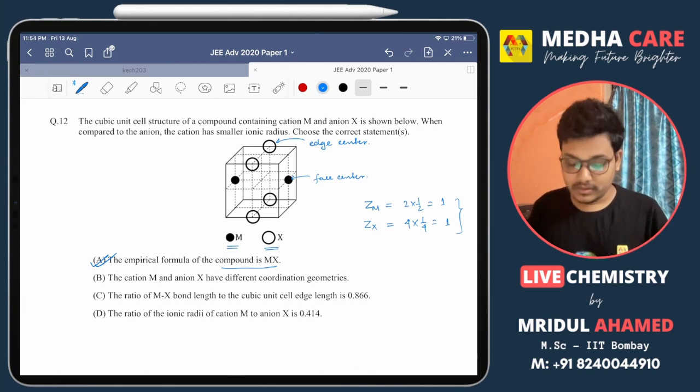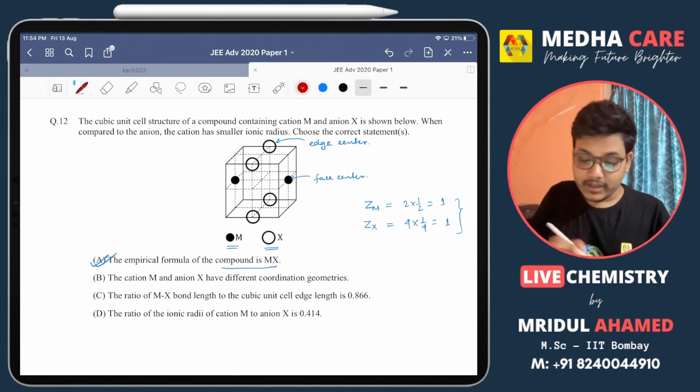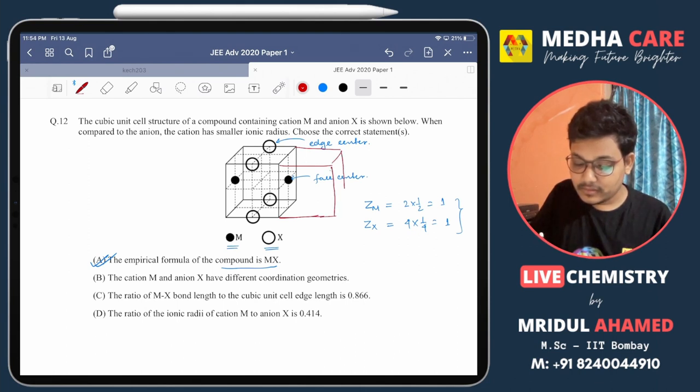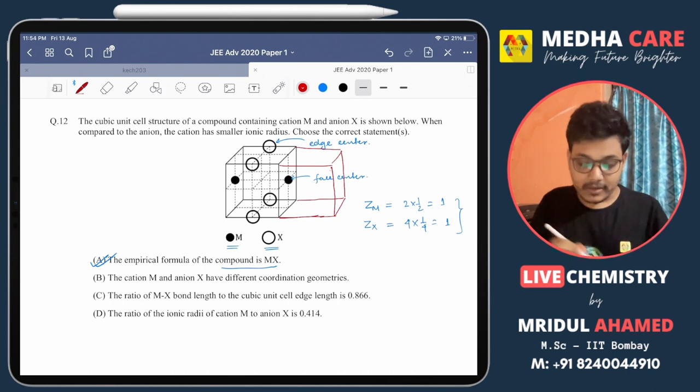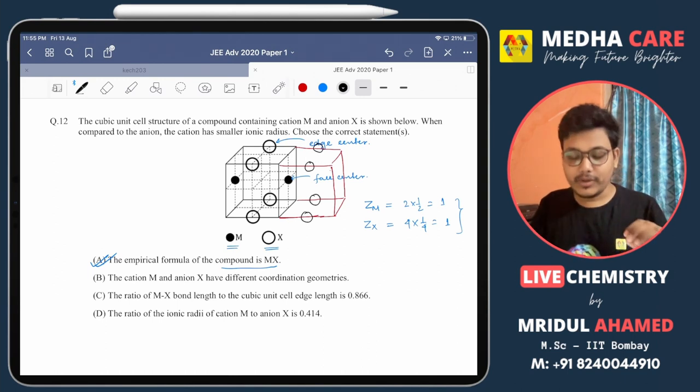Now going to option B: the cation M and the anion X have different coordination geometries. Let me draw another cube just beside this cube. This is just for understanding. You know that unit cells are translated in three-dimensional space without leaving any gaps.